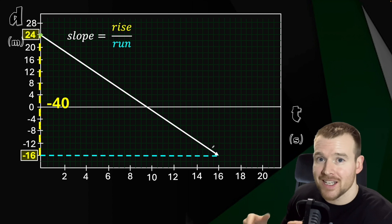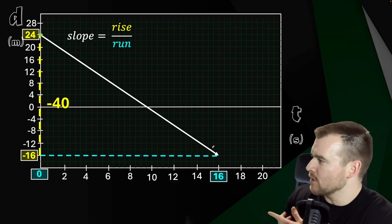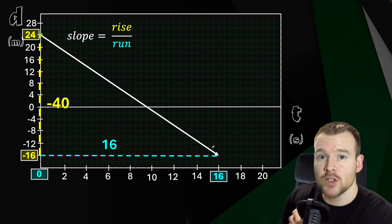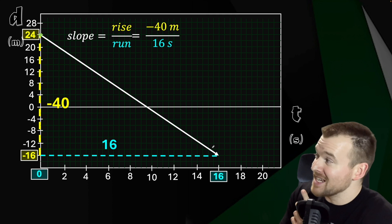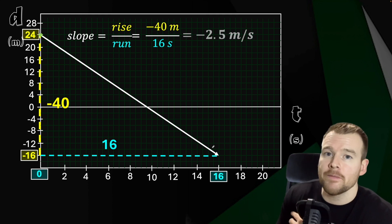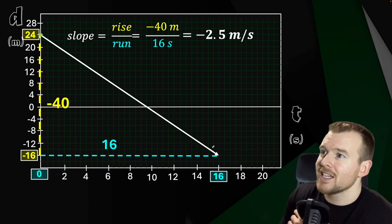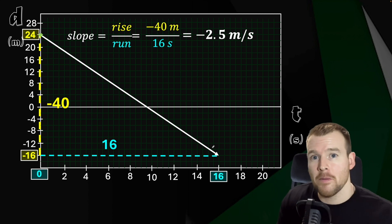Our rise is negative 40 because it came down the whole way. And then our run, kind of similar to before, this time 0 to 16. So I have a run of 16. Throwing in our formula, our rise being a negative value here, negative 40 over 16 gives us negative 2.5 meters per second.